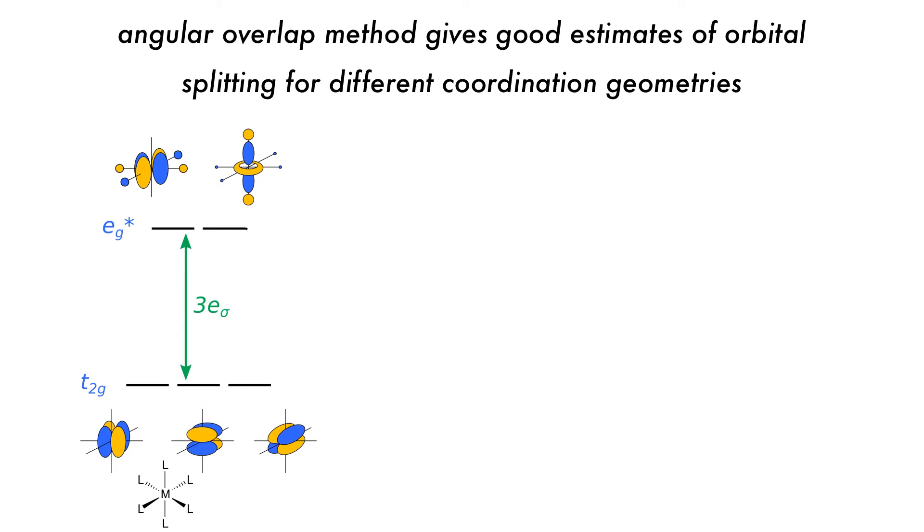The usefulness of the angular overlap method is that it gives a good approximation of the orbital splitting energies of metal complexes with different coordination geometries. The splitting of an octahedral complex is 3 e-sigma. What if the geometry of the complex is changed? How does this affect the splitting energies?